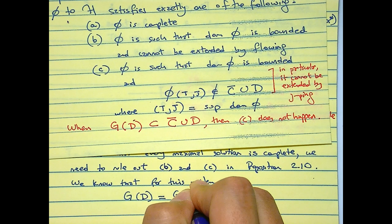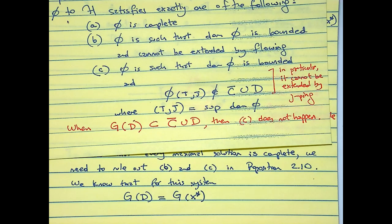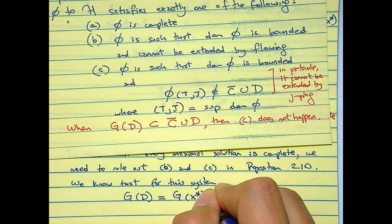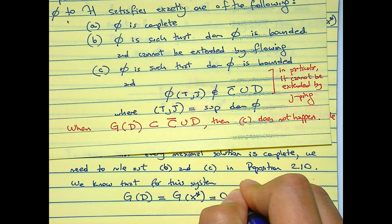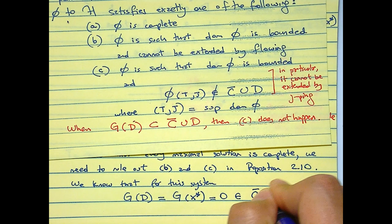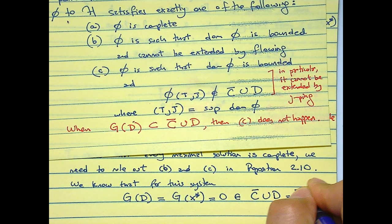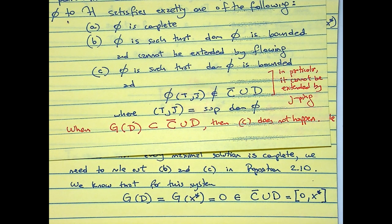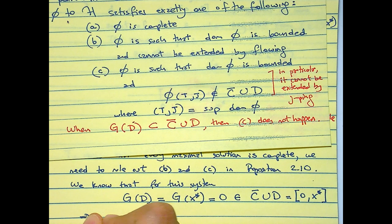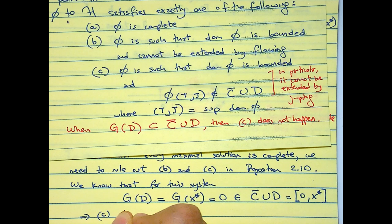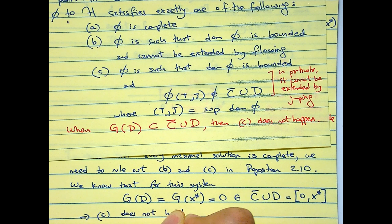We know that for this system, G evaluated on D, which is no more than G evaluated on X star because the jump point is just X star, is equal to 0. And 0 belongs to C bar union D because C bar union D is 0 X star.